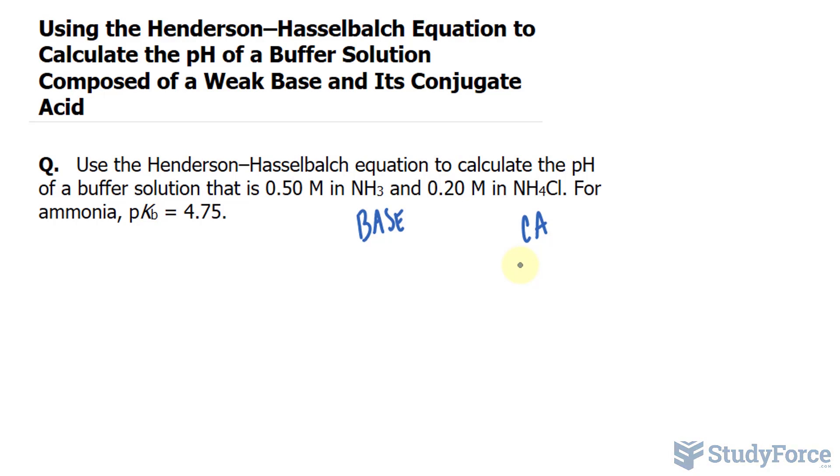Now what's not given in this question is the KB, the acid dissociation constant for NH3, is 1.8 times 10 to the power of negative 5. Now this number is very small relative to the initial concentrations given in the problem of 0.50 and 0.20.